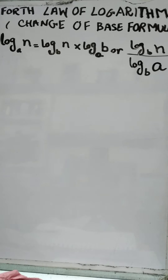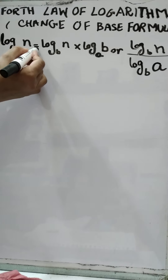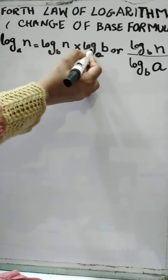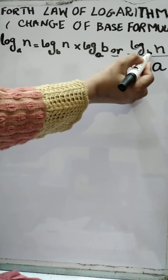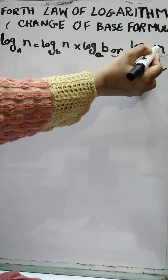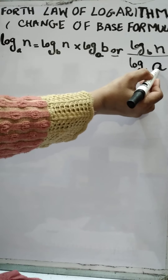I am going to explain the fourth law of logarithm, which is also called the change of base formula. We have to prove that log base a of n is equal to log base b of n multiplied by log base a of b, or alternatively, log base b of n over log base b of a.